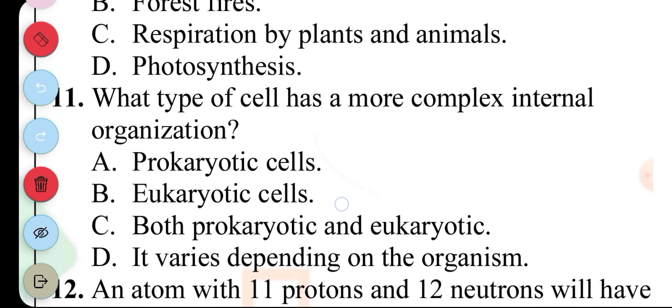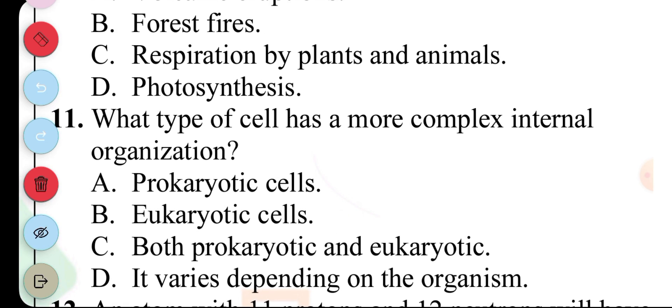Question 11. What type of cell has a more complex internal organization? A. Prokaryotic cell, B. Eukaryotic cell, C. Both prokaryotic and eukaryotic cell, D. It varies depending on the organism. The answer to question 11 is B. Eukaryotic cell.